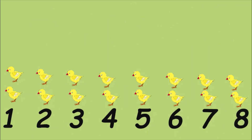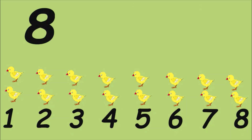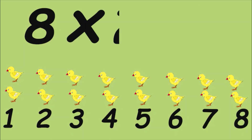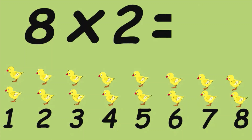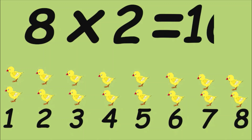There are eight rows and in each row there are two chicks, so we write eight times two. And the answer is sixteen.